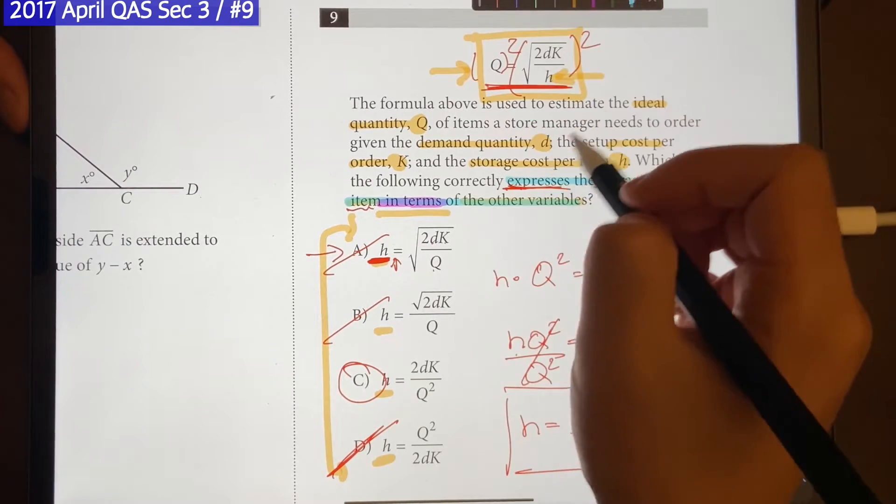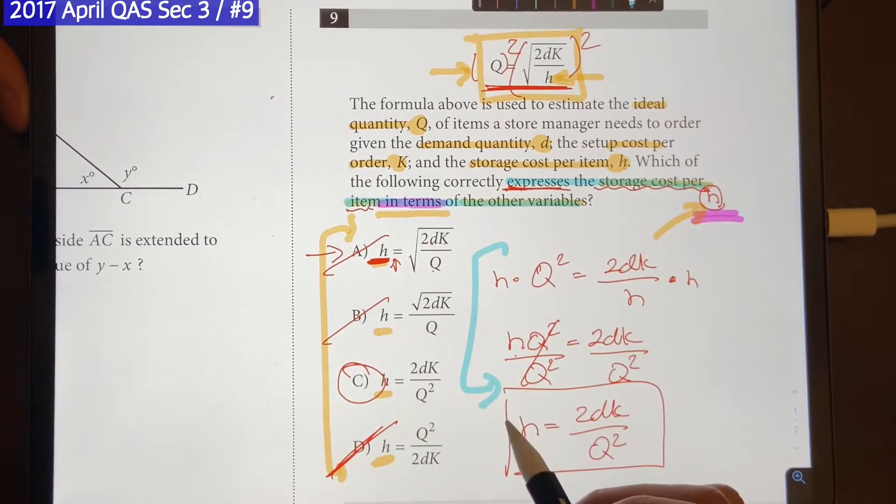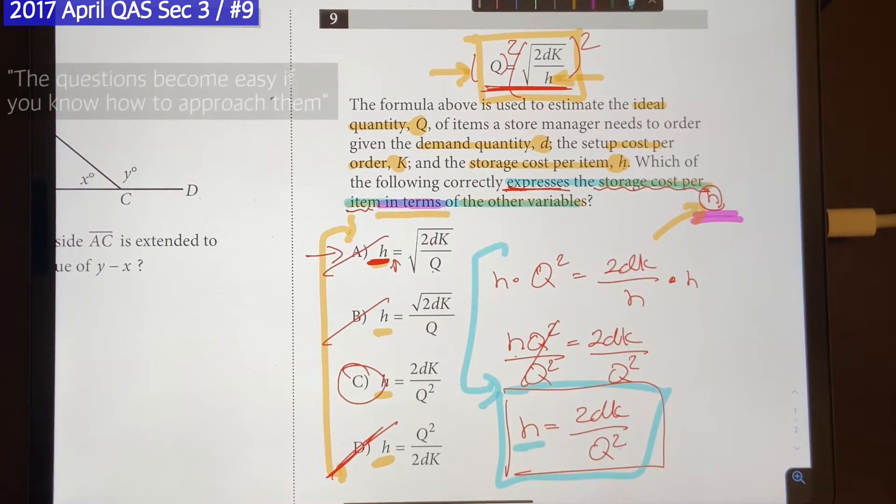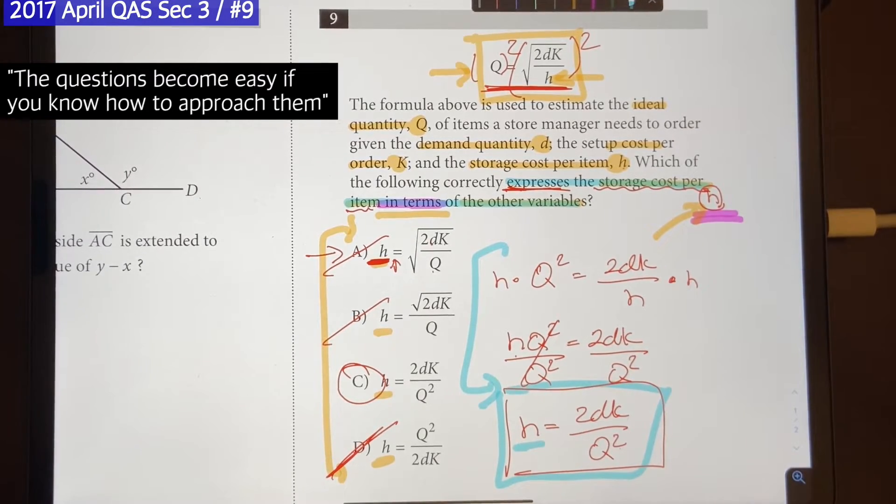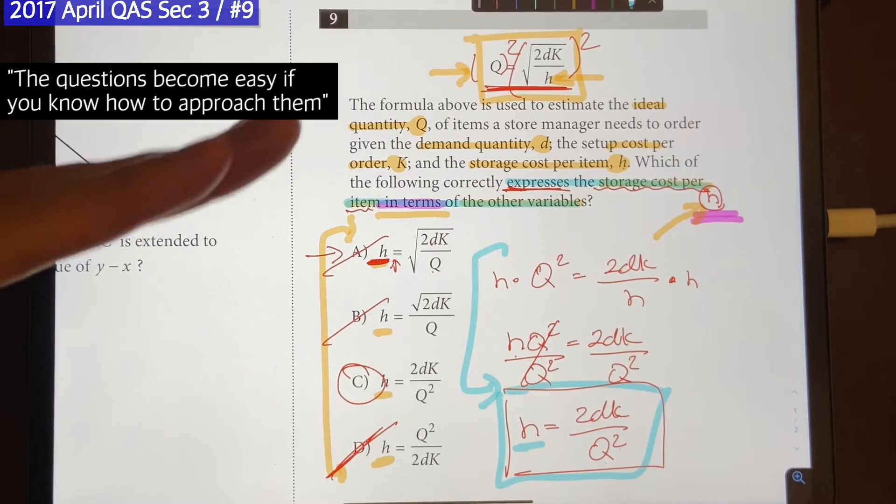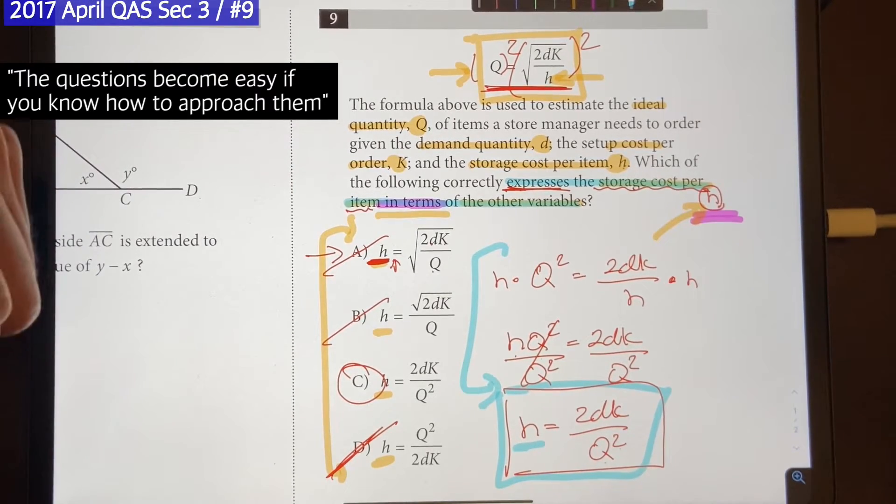All you have to do is rearrange the equation by following these steps and find out the equation by leaving H alone. And that's pretty much how the SAT is. The question is easy if you know how to approach it, but it's hard if you don't know how to approach it. And your goal is to know how to approach every single question by learning all the concepts.